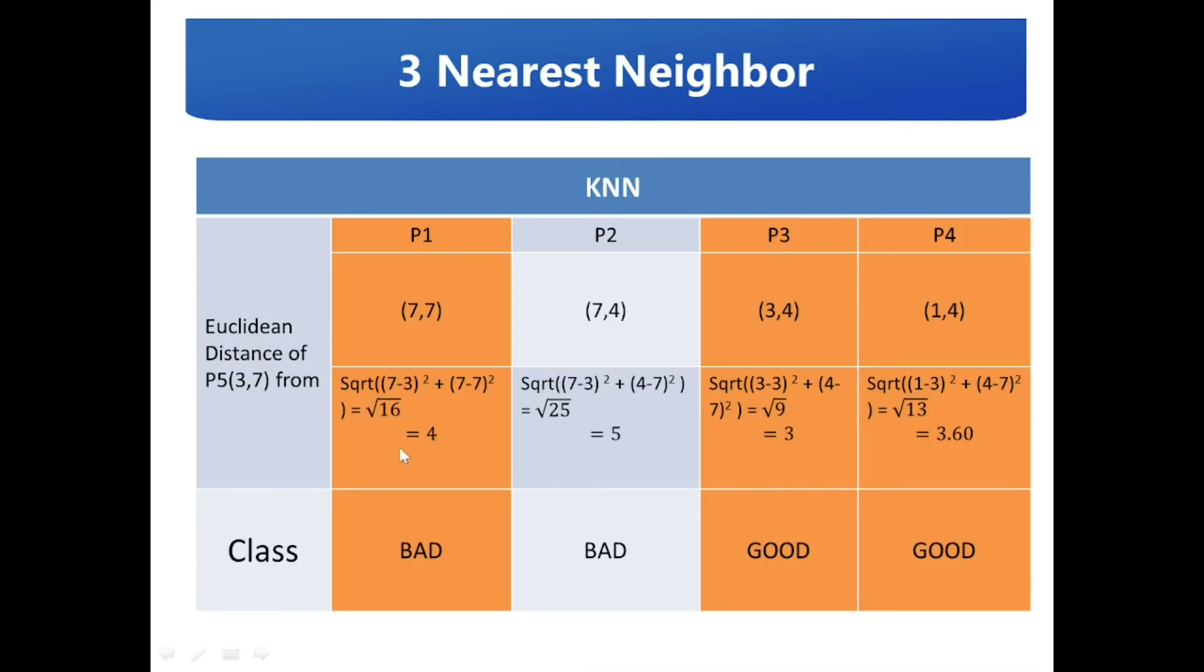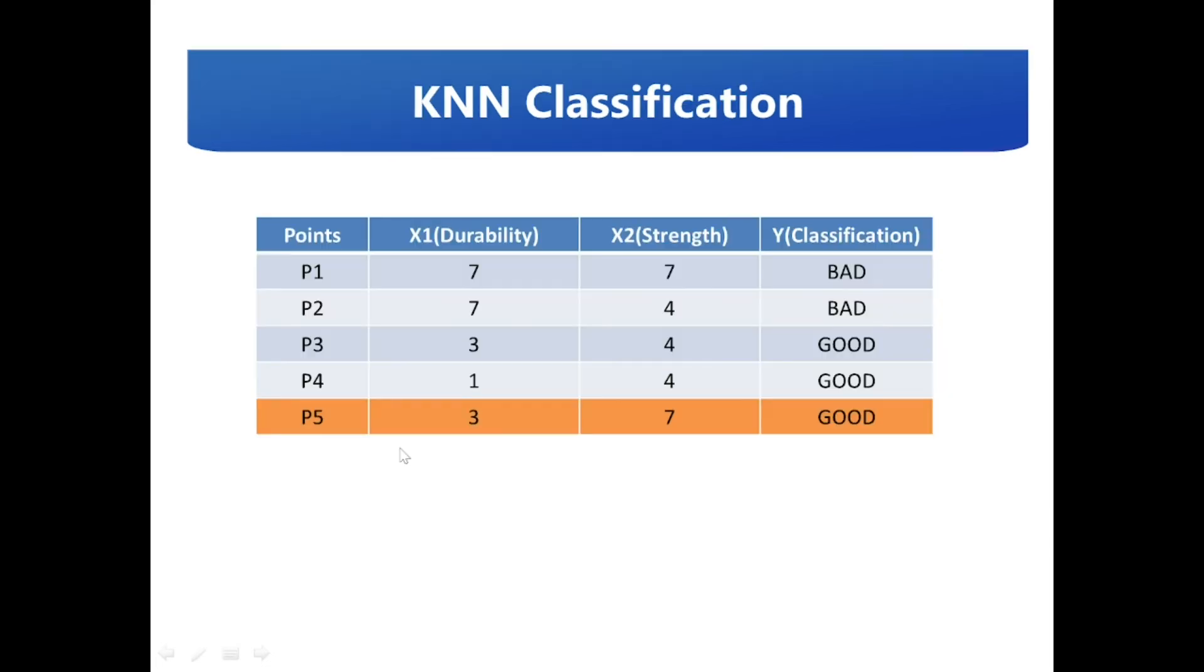Since the distances 4, 3, and 3.60 are nearest neighbors by comparing the distance values, we shall opt the value of k equals 3. Holding the value of k equal to 3, the majority vote goes to good, so the point P5 is being classified as good.